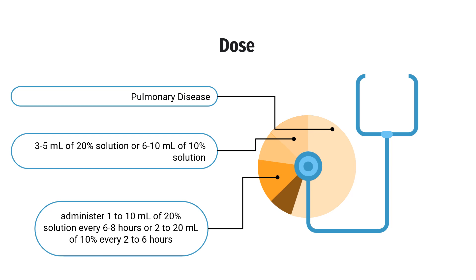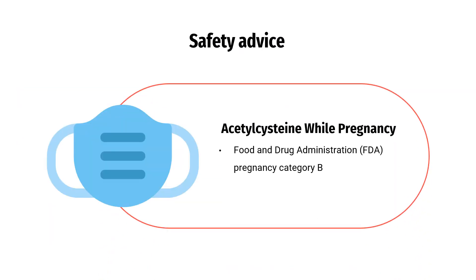For acetaminophen overdose, see the separate drug monograph for acetylcysteine antidote. Contrast agent-associated nephrotoxicity prevention (off-label): 600 mg PO every 12 hours for 2 days — the day before and the day of contrast administration. Keratoconjunctivitis sicca (off-label): 1 drop of 10% solution in eyes every 6–8 hours.